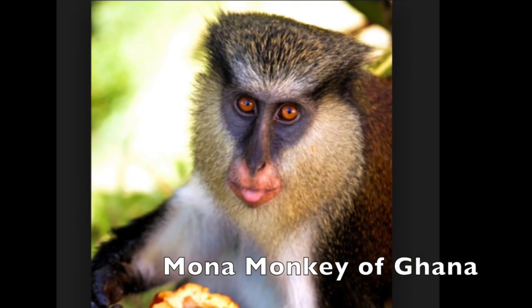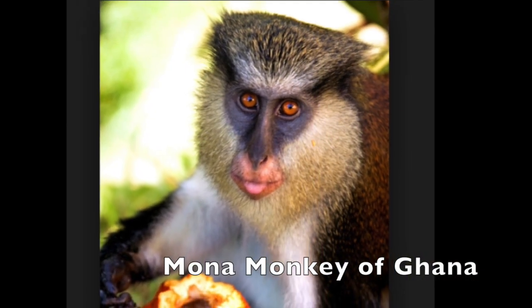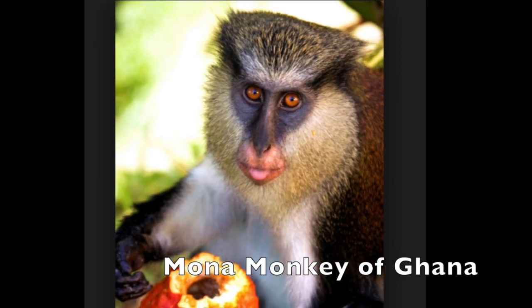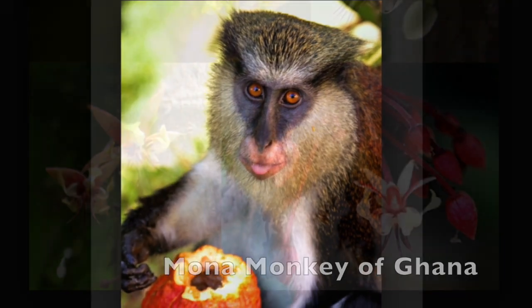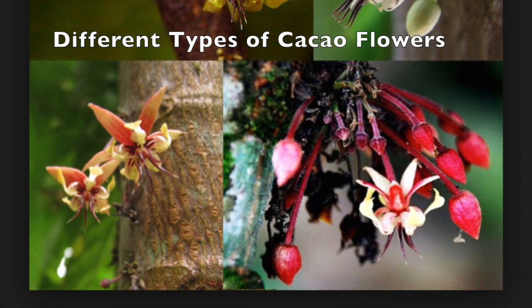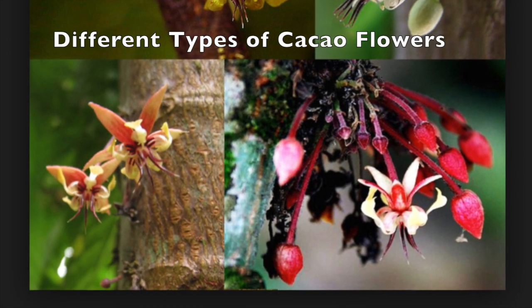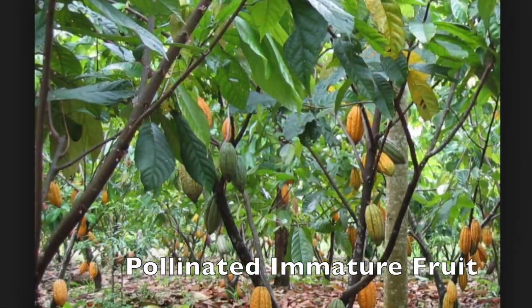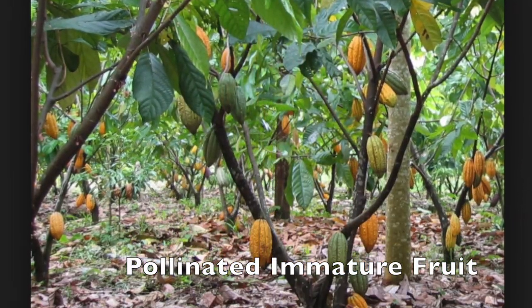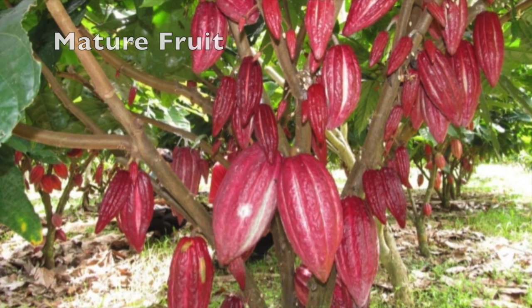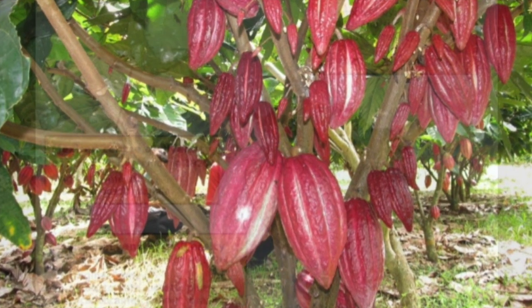Chocolate seeds are dispersed in the wild by mammals such as agouti and monkeys. Only about 5% of flowers receive enough pollen to start fruit development. When they are pollinated, there is a dramatic change as the tiny flowers develop into massive fruits.